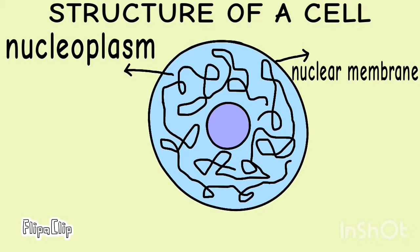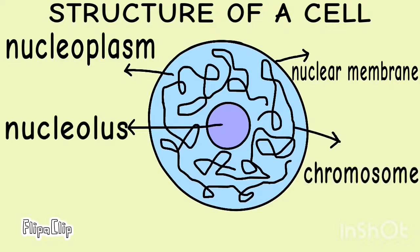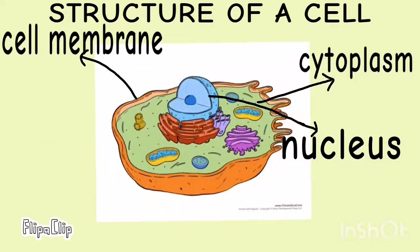There is nucleoplasm, that is the liquid present in the nucleus. There is also a spherical body called the nucleolus. There are thread-like structures called chromosomes which carry genes. The nucleus and the cytoplasm together make up the protoplasm.